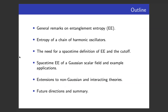I'll begin with some general remarks on entanglement entropy. Then I'll review a spatial — i.e., on a fixed time slice — calculation of entanglement entropy applied to a chain of harmonic oscillators. Then I'll motivate the need for a space-time definition of entanglement entropy and the UV cutoff which regularizes it, and I'll review a formulation admitting these. I'll summarize results from the application to a Gaussian scalar field, in continuum geometries as well as discrete causal sets, and discuss future directions including extensions to interacting theories.